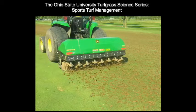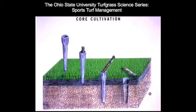In the previous three pictures, the coring machines used one-half to three-quarters inch diameter hollow tines penetrating the soil to a depth of two and a half to three inches. This is a schematic drawing of the impact of a hollow tine on turf.